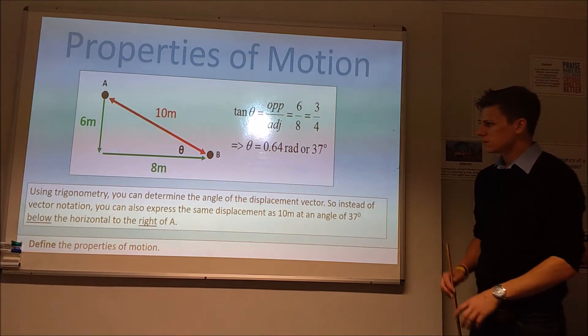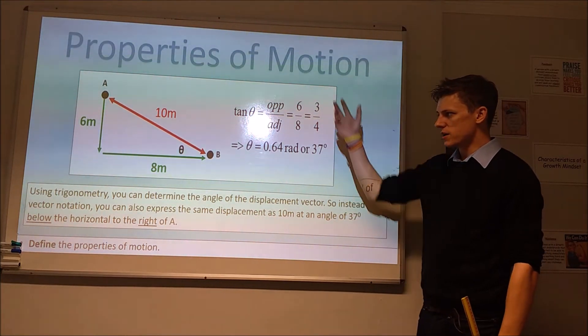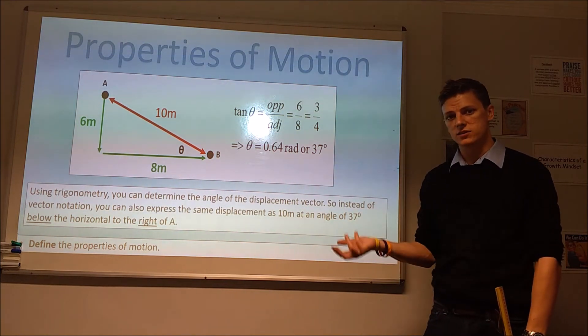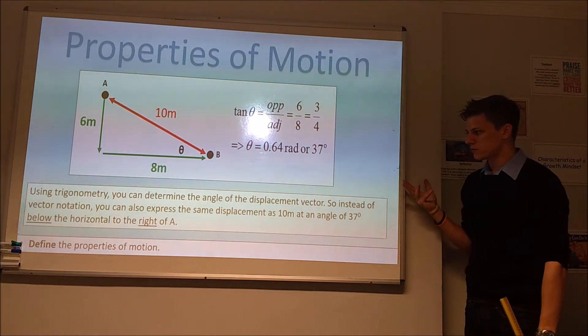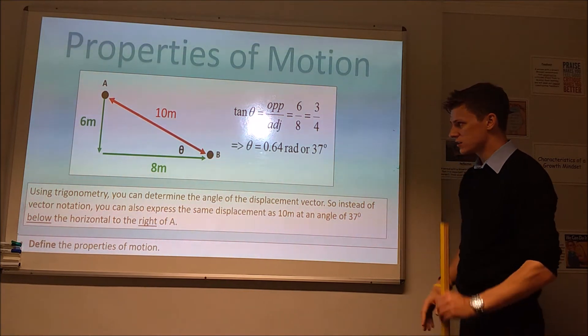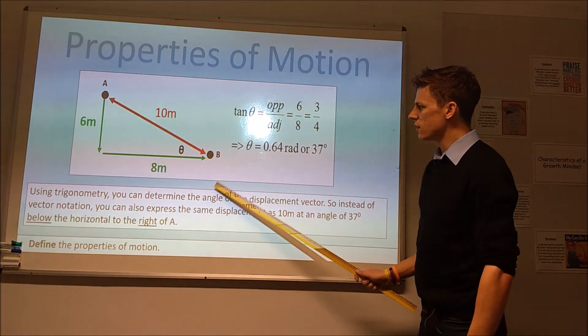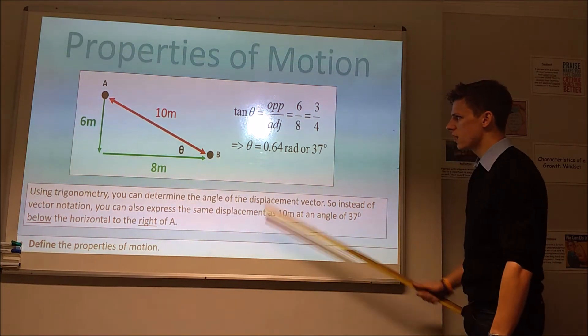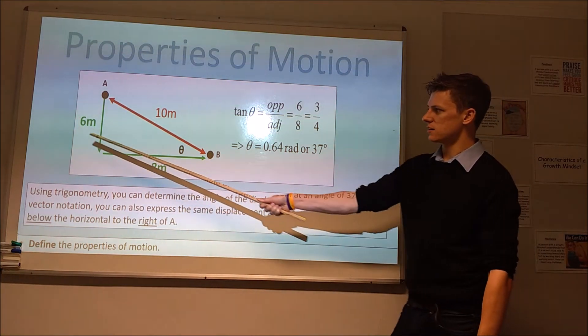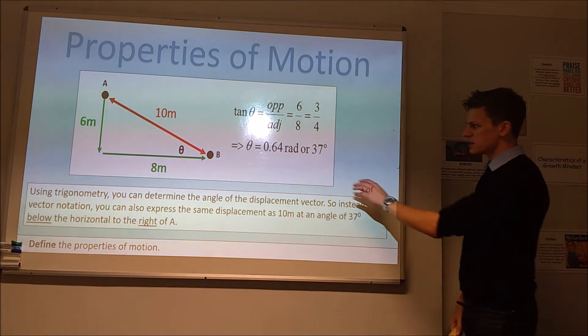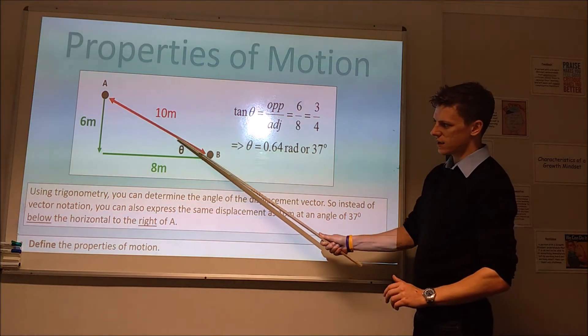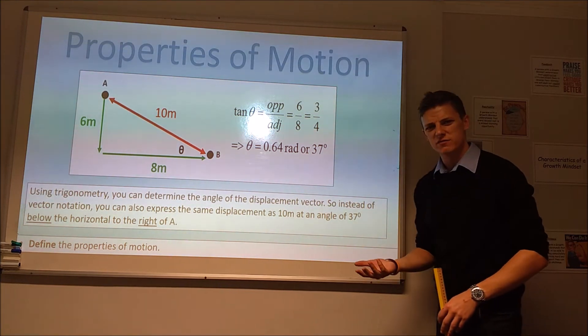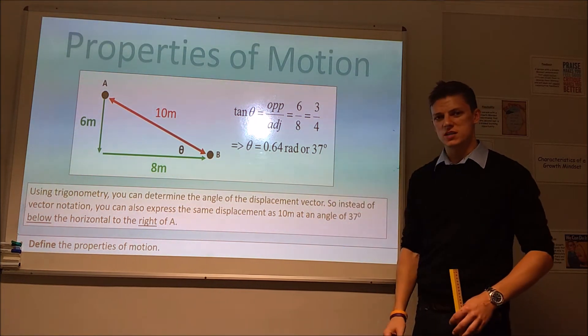We've said we can express it using that coordinate system, but I said earlier we can express it in terms of magnitude and direction. This is where the trigonometry that you should have learned beforehand will come in handy. We've said to go from A to B, we need to travel ten meters. But ten meters in which direction? Well, we can use a tan rule here, and we need the opposite side and the adjacent side. We can then solve that to work out that this angle here is 37 degrees or 0.64 radians. The further you get in physics or engineering, the more you'll use radians rather than degrees.